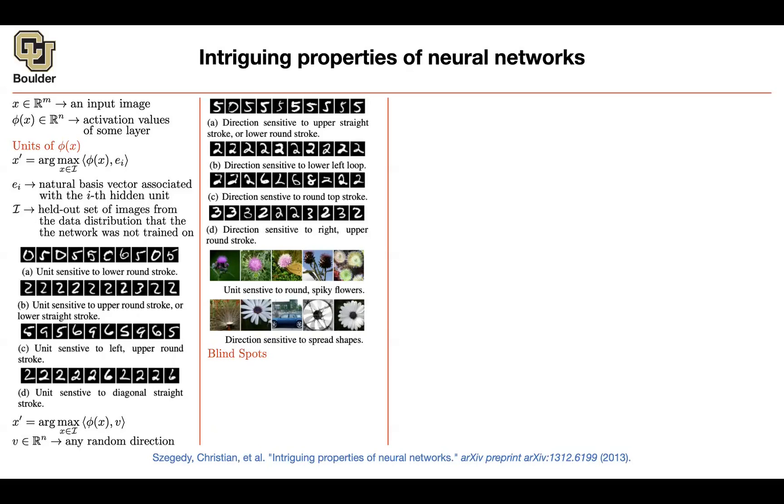Then we started with this observation that neural networks have some blind spots. To find the blind spots we have to solve an optimization problem trying to find an image as close as possible to our original image such that our network is going to make a mistake with 100% failure rate. And this is what we call a targeted attack.